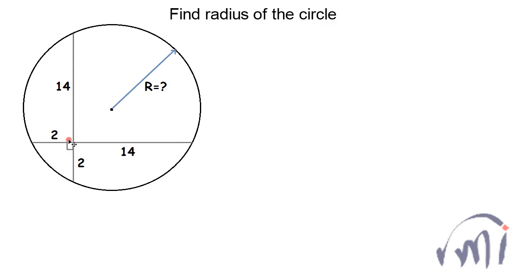are intersecting each other at 90 degrees. We have to find the radius of the circle. Before we start, let me just name all the points.